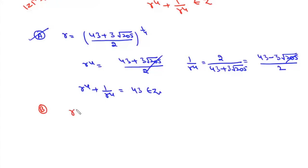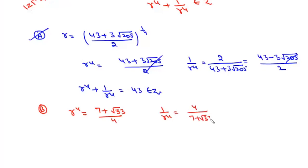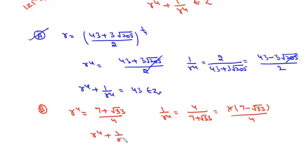For option B, R⁴ = (7 + √33)/4 and 1/R⁴ = 4/(7 + √33). Rationalizing: 4(7 − √33)/(49 − 33) = 4(7 − √33)/16 = (7 − √33)/4. Adding R⁴ + 1/R⁴, the √33 parts cancel giving 7/2 + 7/2... wait, we get 7/2, which is not an integer. So option B is not an answer.